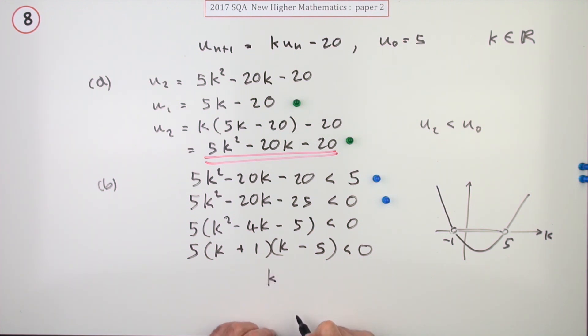Simplest way to write that is k is—you're going to get a mark if you do that, identifying the negative 1 and the 5, and the sketch counts for this part as well. k has got to be less than 5 and at the same time it's got to be greater than negative 1. That's the fourth mark.